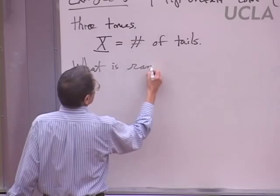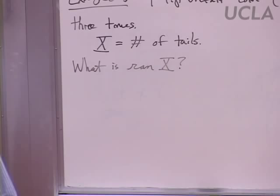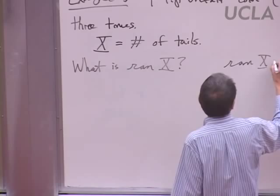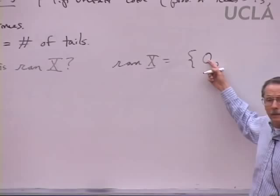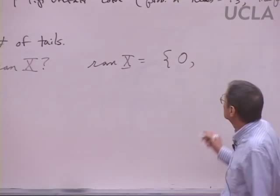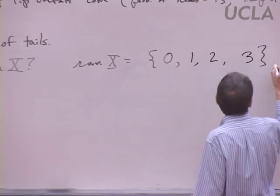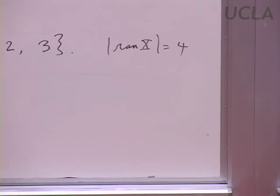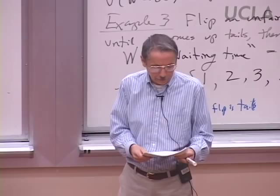A random variable we might choose to look at is the number of tails we get. What is the range of this random variable — what values could it take on? Well, the smallest it could be is zero — maybe all three flips come up heads. Or we could get one tail, or two, or three. So the range has size four: four possible values for this random variable.